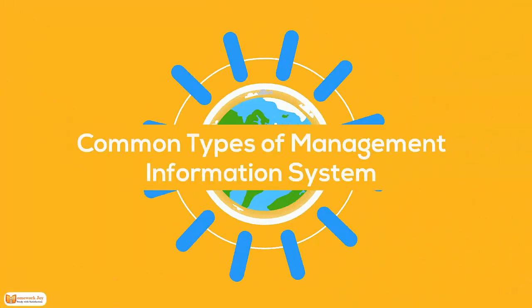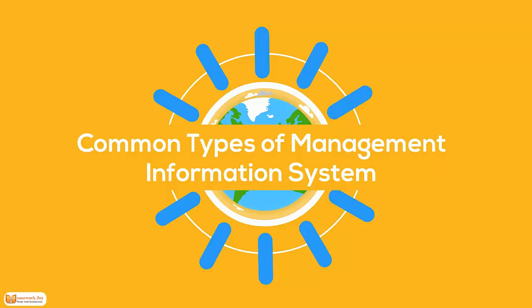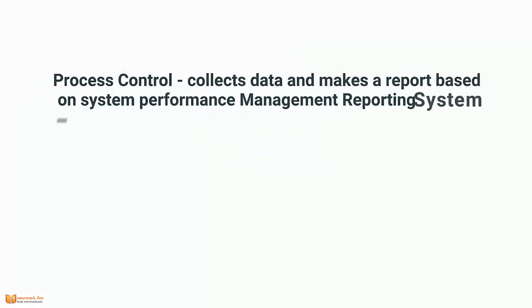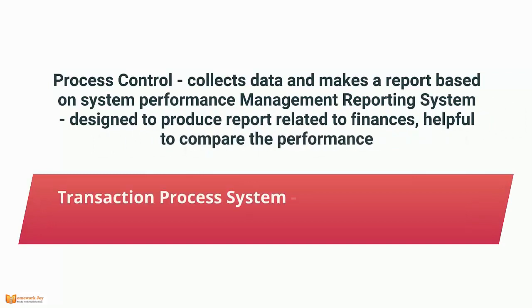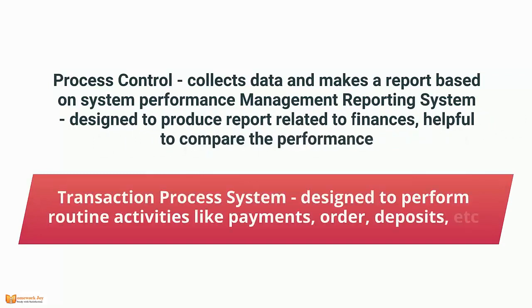Types of Management Information System. Process Control: collects data and makes a report based on system performance. Management Reporting System: designed to produce reports related to finances, helpful to compare the performance. Transaction Process System: designed to perform routine activities like payments, orders, etc.